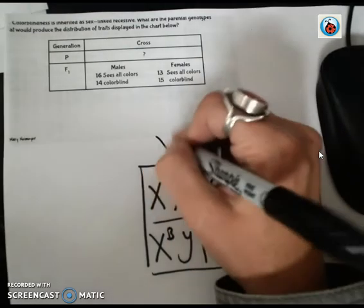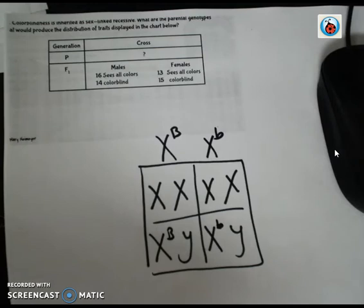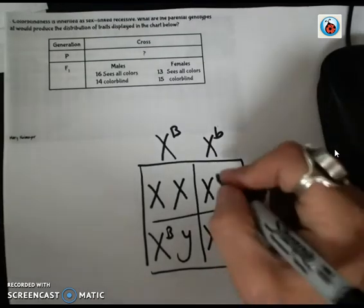So now I know that the female mother from the parental cross was heterozygous. And then it says here that half of my females are colorblind and half can see all colors.